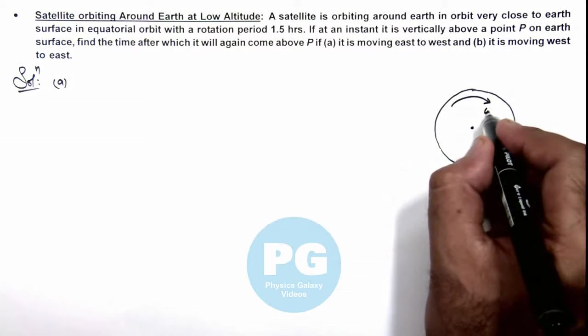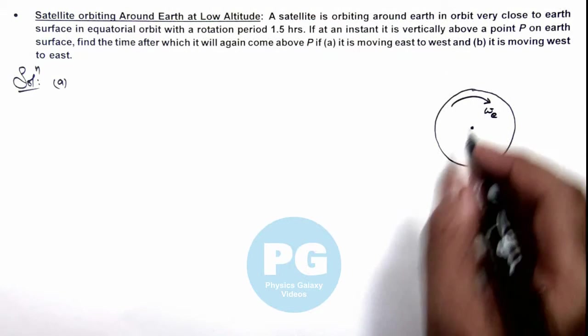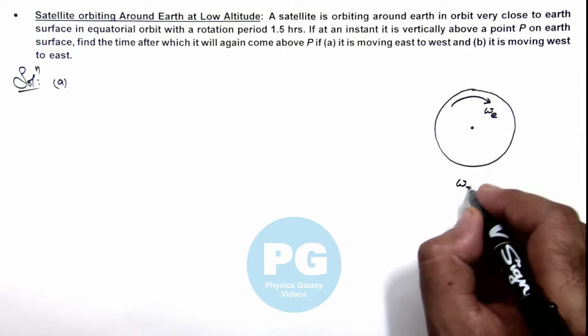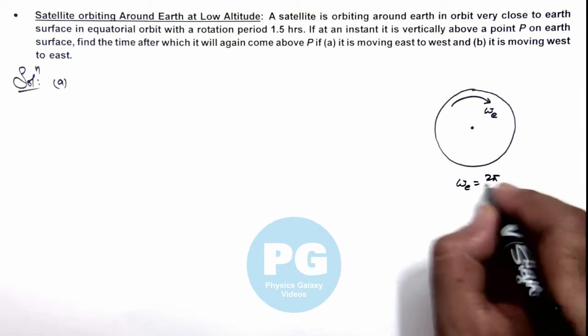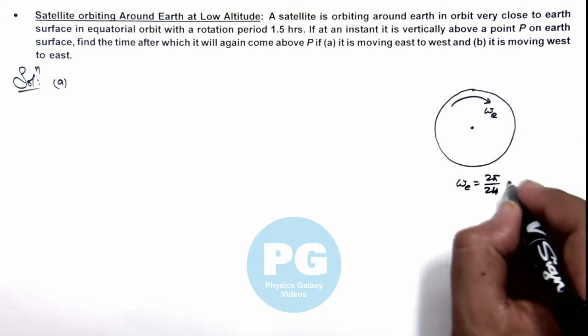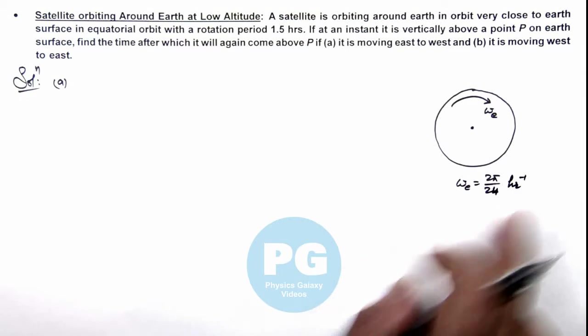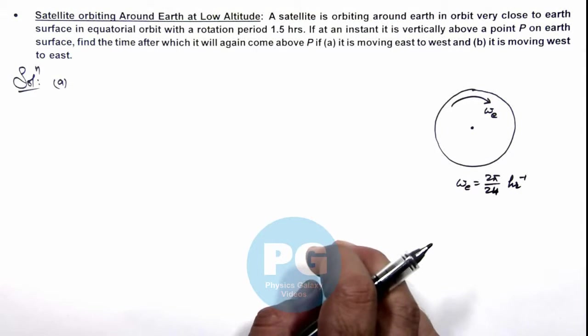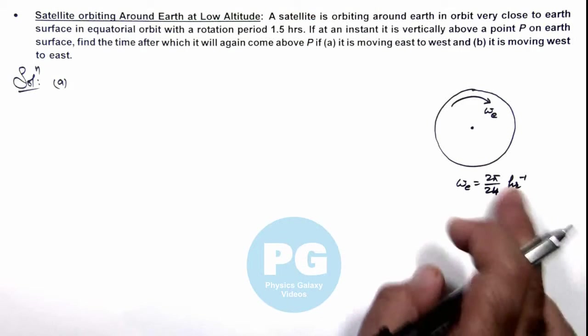Say Earth rotation period is ωₑ. Then we know the angular speed of Earth rotation is 2π/24, and this will be in radians per hour, the unit we use for the angular speed.